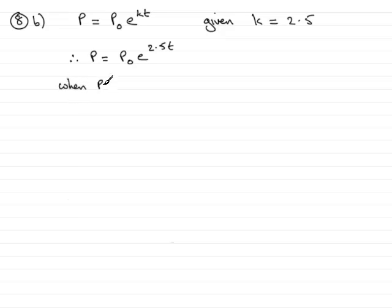So when p equals 2p₀, if I substitute that in the above, what I end up with is 2p₀ equals p₀e^(2.5t). So I can divide both sides by p₀, and I would end up with 2 equals e^(2.5t).